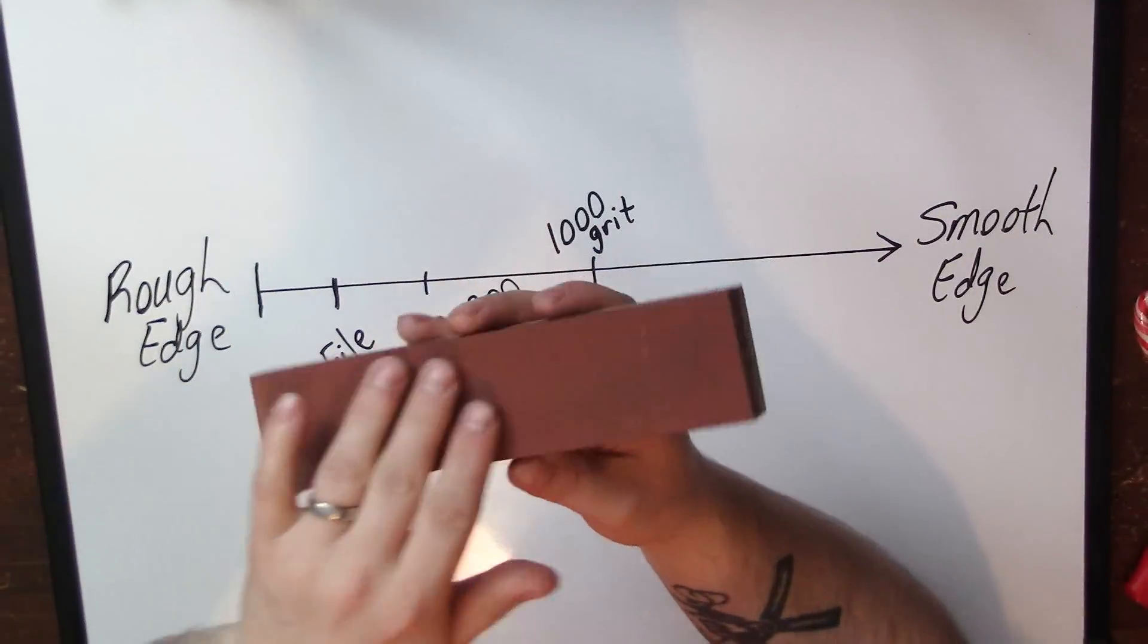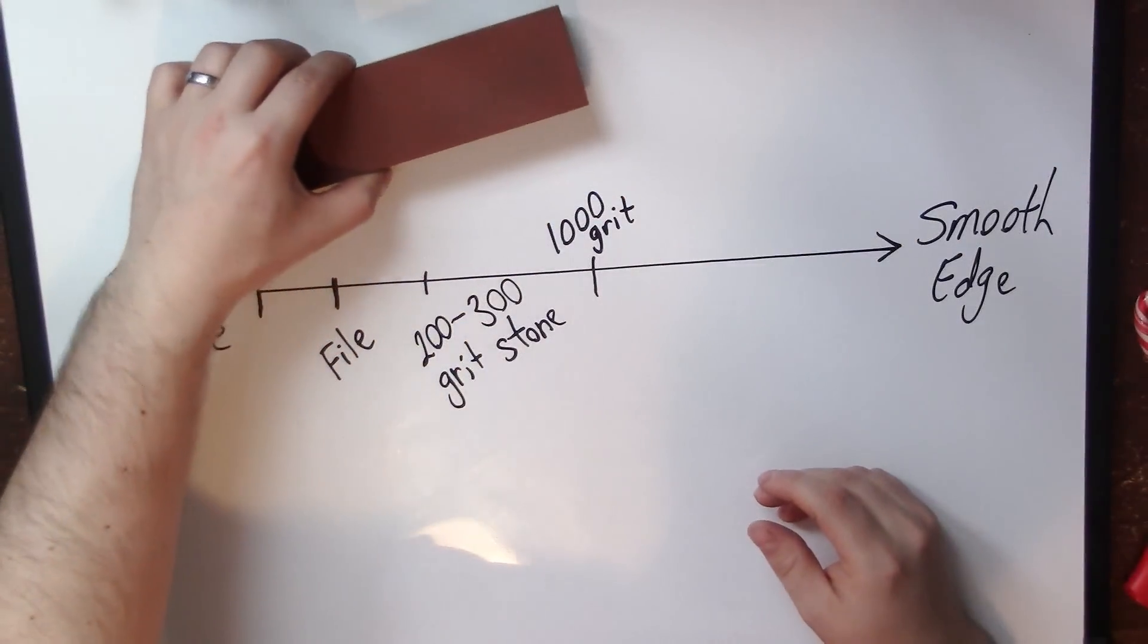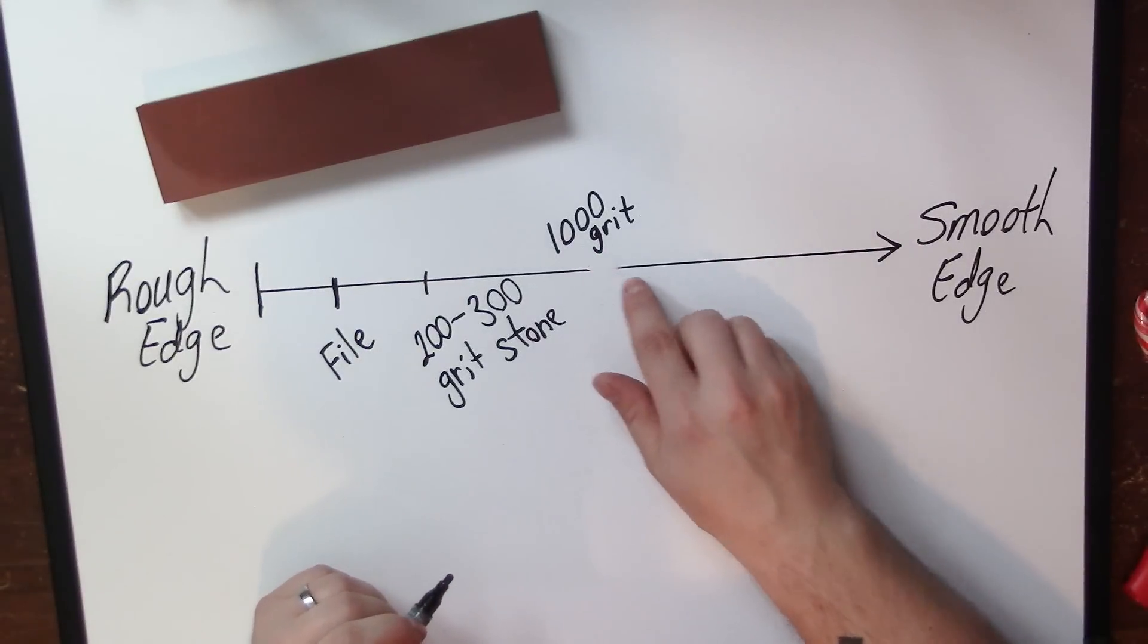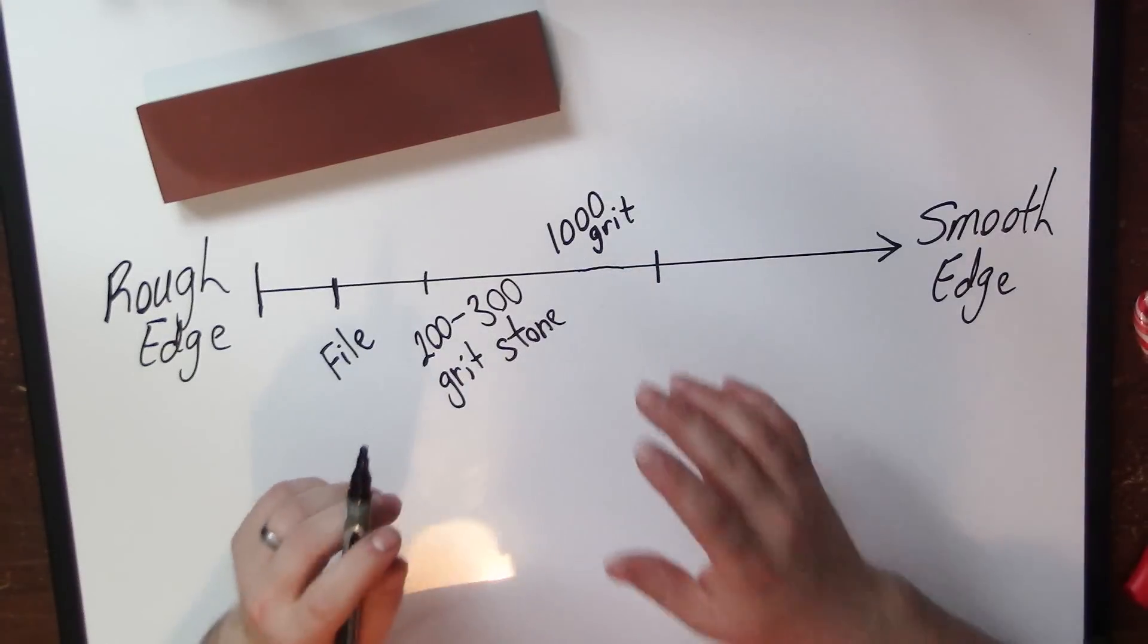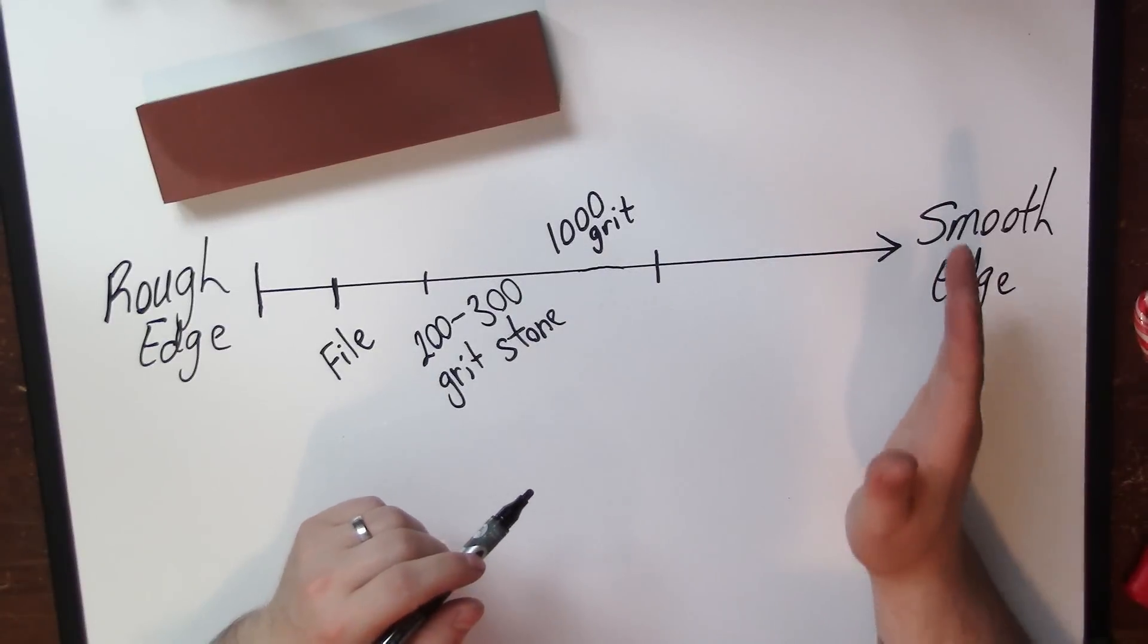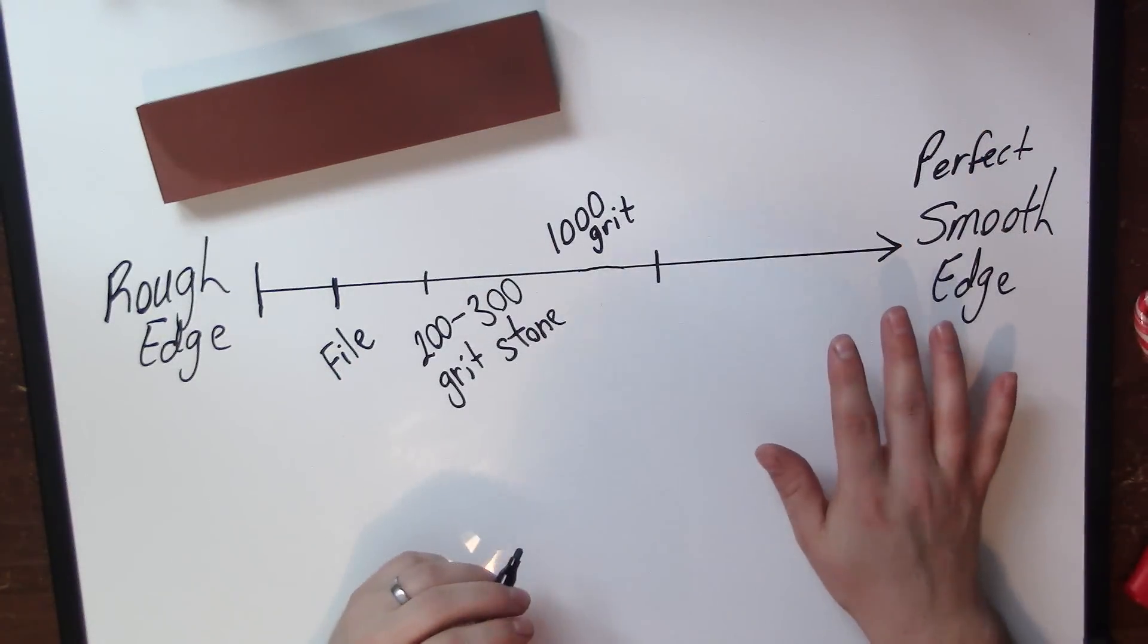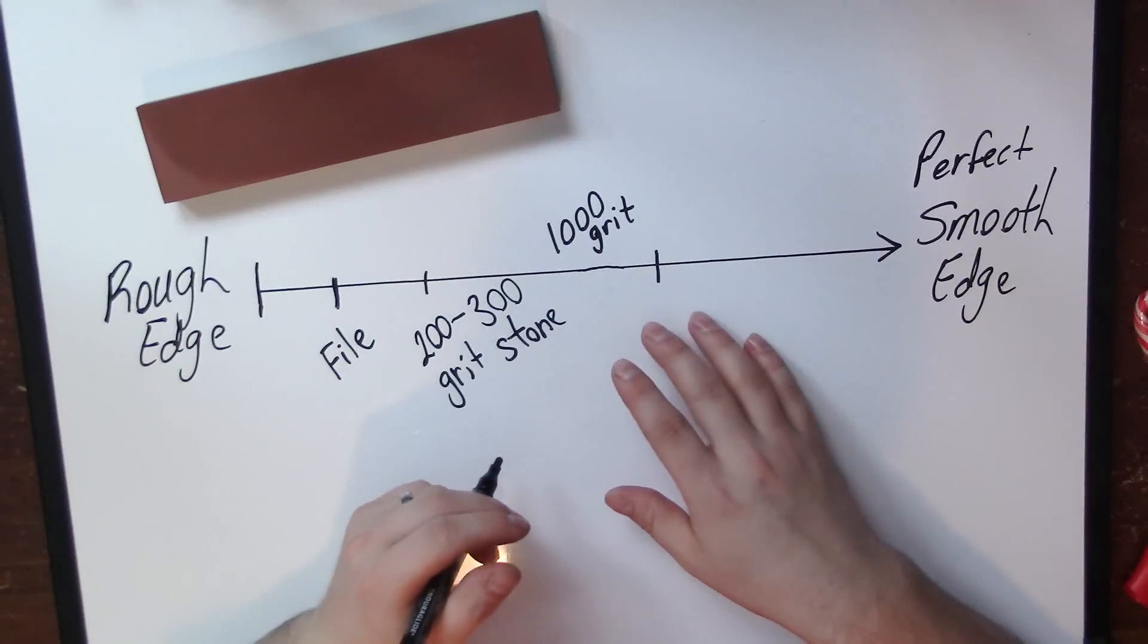Here's a 1000 grit stone. It cuts material pretty quickly. From a 1000 I could have probably put the 1000 even a little further along this gradient. 1000 is a pretty smooth edge, pretty keen. And notice we're getting closer to this perfect razor sharp smooth edge.